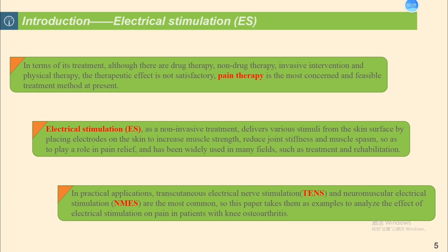Electrical stimulation as a non-invasive treatment delivers various stimulation from the skin surface by placing electrodes on the skin to increase muscle strength, reduce joint stiffness and muscle spasm, so as to play a role in pain relief. It has different types of use in relieving knee osteoarthritis pain, including transcutaneous electrical nerve stimulation (TENS), neuromuscular electrical stimulation (NMES), interferential current (IFC), and so on.